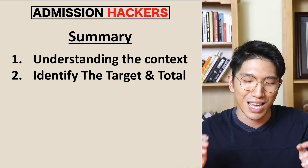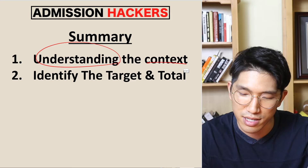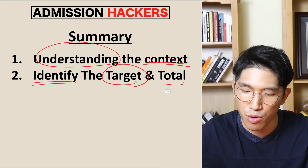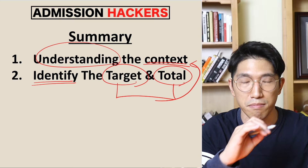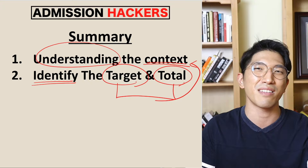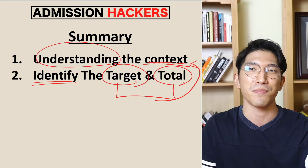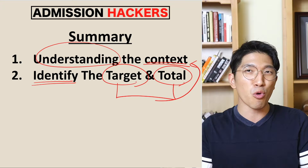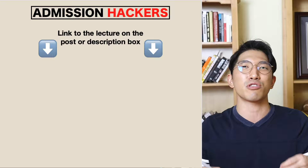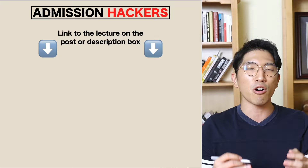To summarize what we went over today: in order to get these probability questions right, you have to first understand the context, because probability questions are testing your ability to correctly identify the target and total. So take a deep breath, be relaxed and calm, read the question carefully, and correctly identify the target and the total. You should be able to get every single one of these problems right. If something was unclear or you'd like more detailed explanation and additional practice, go to the link in the description box below — it's a private lecture with full coverage of probability and practice questions.